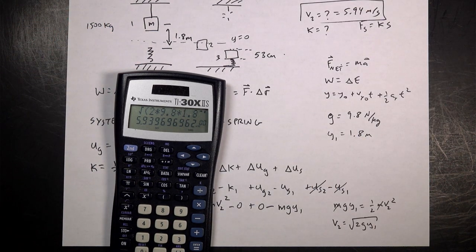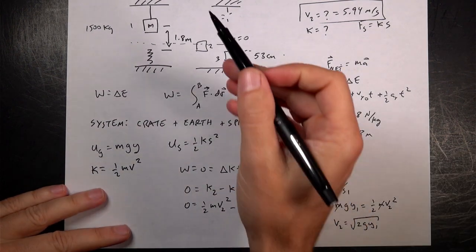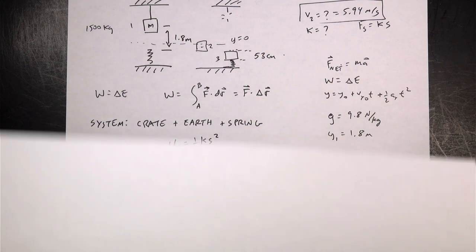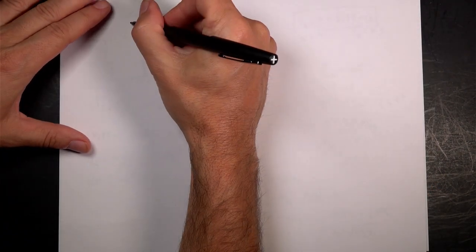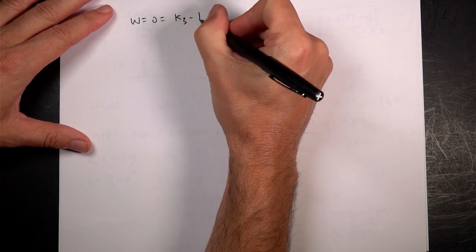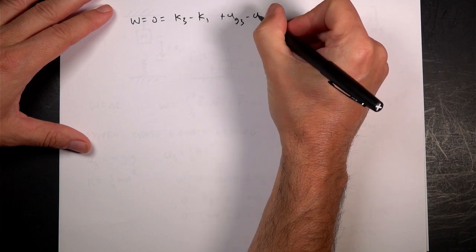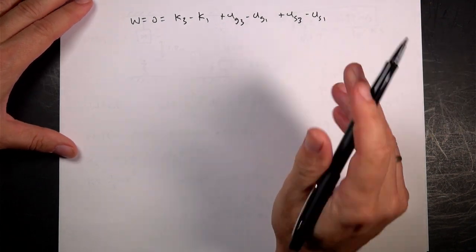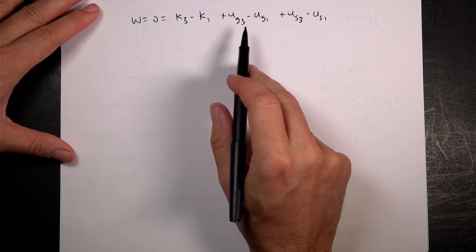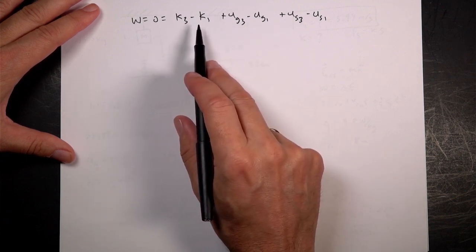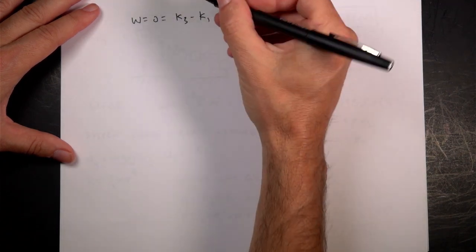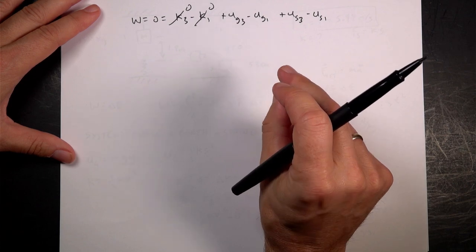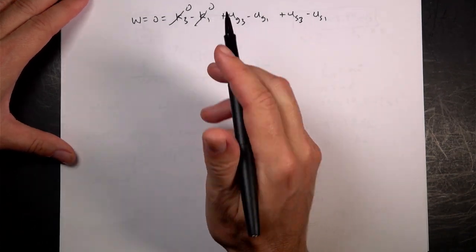Now we need to find the spring constant. I could say I'm going to go from position 1 to 3 and do the work energy principle. I have the same work energy equation. Work equals 0 is K3 minus K1 plus UG3 minus UG1 plus US3 minus US1. Remember, these are changes in energy. It starts and ends at rest, so both kinetic terms are 0. Neither of the gravitational potential terms are 0 because I picked y equals 0 in the middle. And you could change it in between, but it's rude.